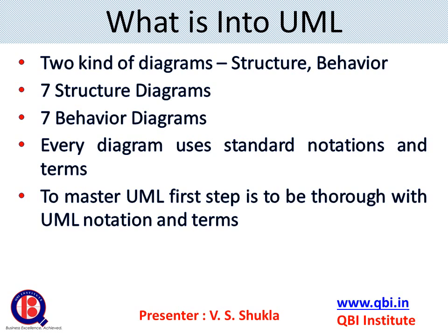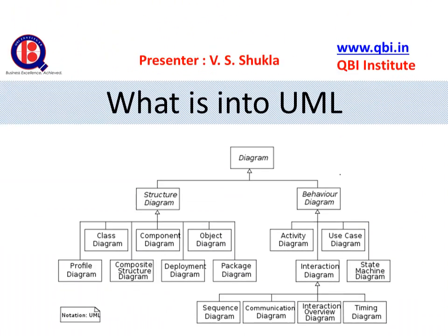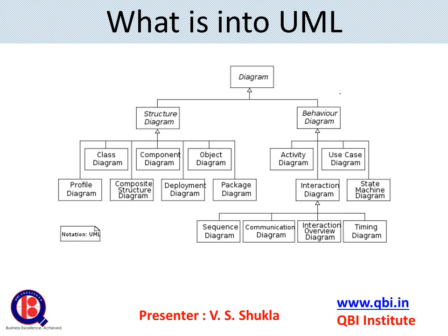Let us now learn what is in UML. UML has two kinds of diagrams: structure diagrams and behavior diagrams — seven of each. Every diagram in UML utilizes standard notations and terms, where a notation is a standard visual symbol or sign. To master UML, the first step is to be thorough with UML notations and terms. Structure diagrams include class diagram, component diagram, object diagram, profile diagram, composite structure diagram, deployment diagram, and package diagram. Behavior diagrams include activity diagram, use case diagram, state machine diagram, and interaction diagrams such as sequence diagram, communication diagram, interaction overview diagram, and timing diagram.